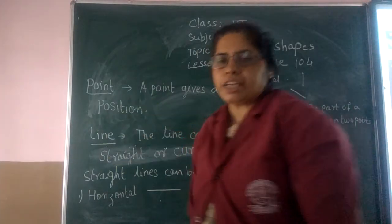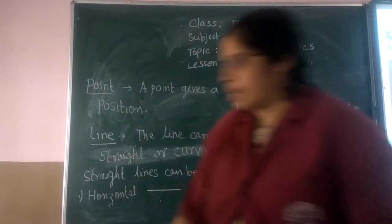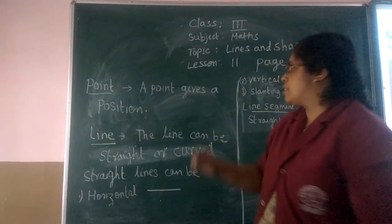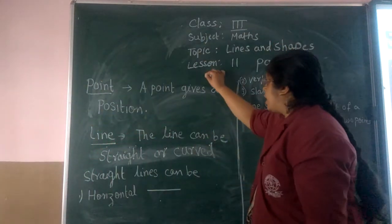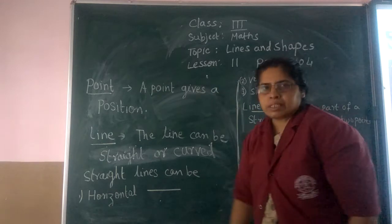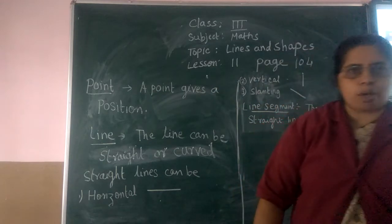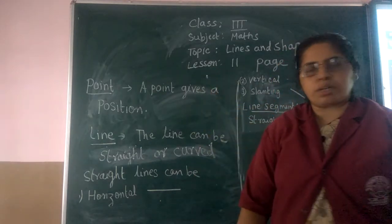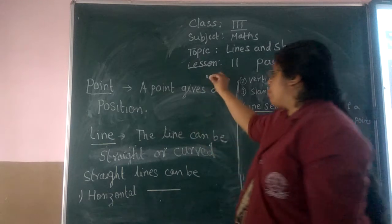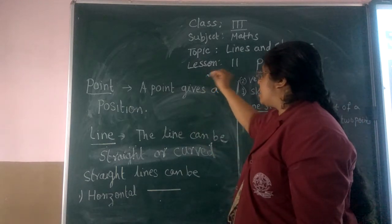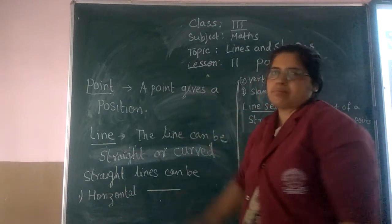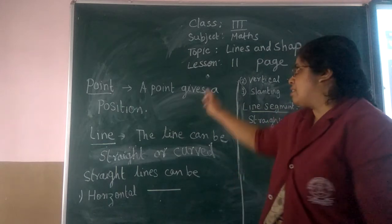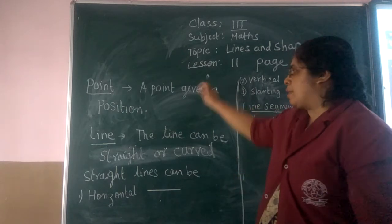First, point. What is a point? In English you have this — it's the same as a stop, or otherwise we say dot. But in maths we say this is a point. When we have some points, that will be a point.